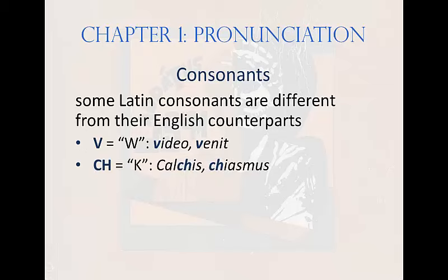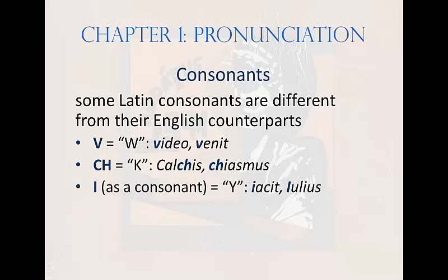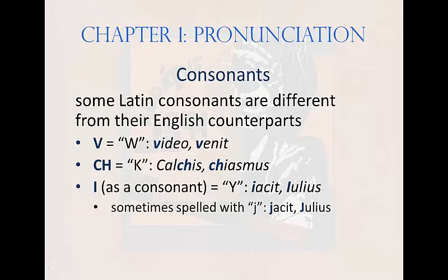CH is pronounced as K, as in 'calcus' or 'chiasmus' — it's never pronounced as 'chuh.' And finally, I, which serves as both a consonant and a vowel in Latin. When it's a vowel, it's simply an 'ih' sound. But when it's a consonant, it sounds like our consonant Y, as in 'jachet' or 'iulius.' To distinguish when I is serving as a vowel or consonant, sometimes it's written differently — the consonant form is spelled like our letter J, but it still has the Y sound. This is like German, where J is pronounced with a Y, as in the German word for yes, 'ja.'